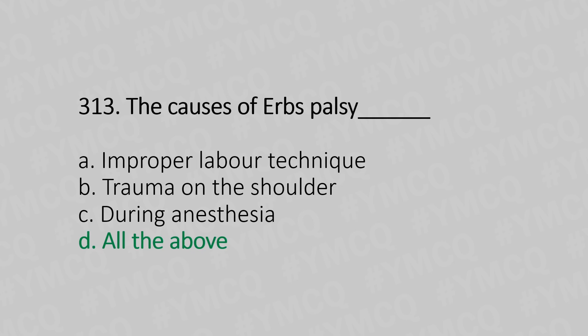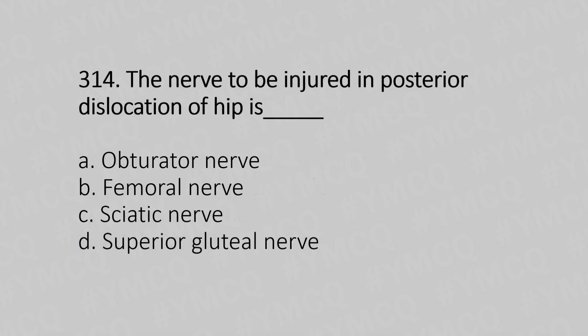Question 314: The nerve to be injured in the posterior dislocation of hip is — Option A: obturator nerve. Option B: femoral nerve. Option C: sciatic nerve. Option D: superior gluteal nerve. The answer is Option C, sciatic nerve.